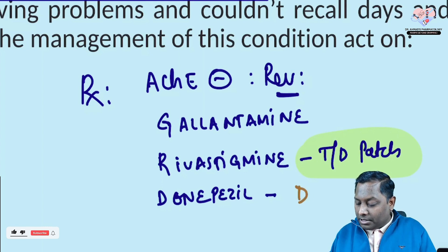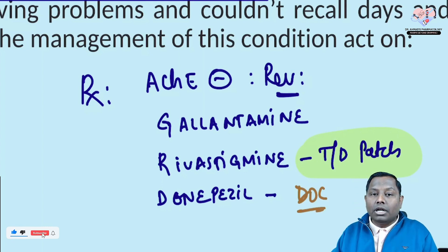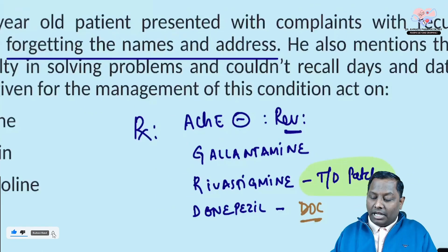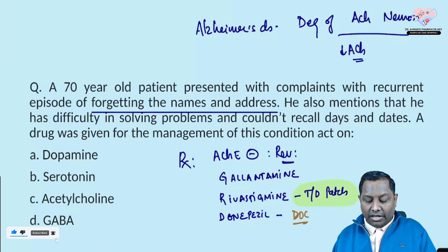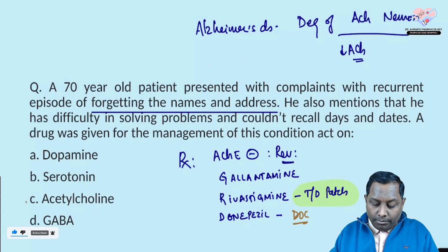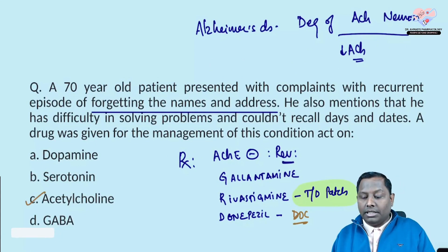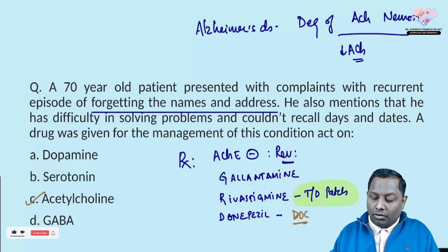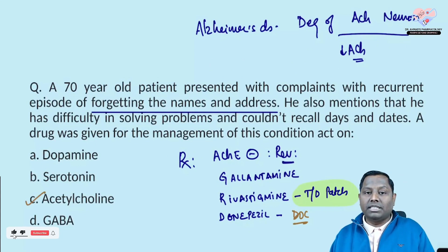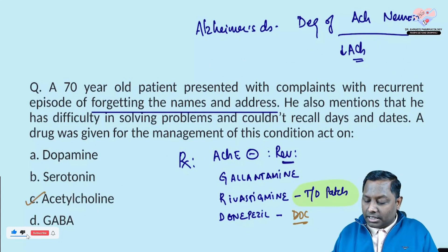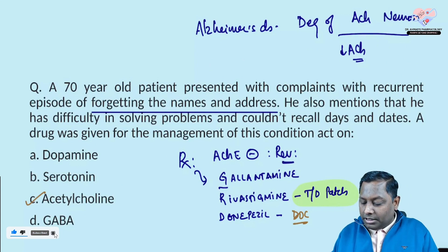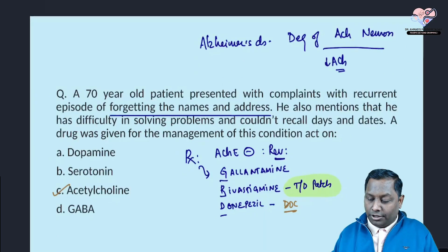Among the GRD drugs, donepezil is the drug of choice due to its longer half-life and fewer side effects. So we mainly try to increase acetylcholine levels in Alzheimer's disease, using GRD drugs, with donepezil as the drug of choice.